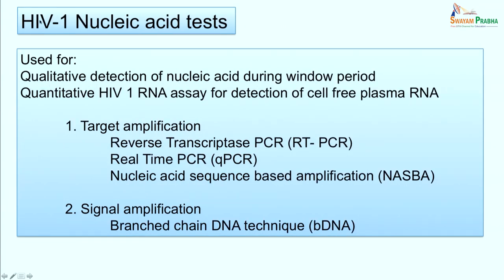Nucleic acid tests (NAT) are used for two purposes: qualitative detection of nucleic acid during the window period (when antibody detection is impossible), and quantitative HIV-1 RNA detection for monitoring disease progression. Two types of assays are available: target amplification — including RT-PCR, real-time PCR, and nucleic acid sequence-based amplification (NASBA) — and signal amplification, which includes the branched-chain DNA (bDNA) technique.